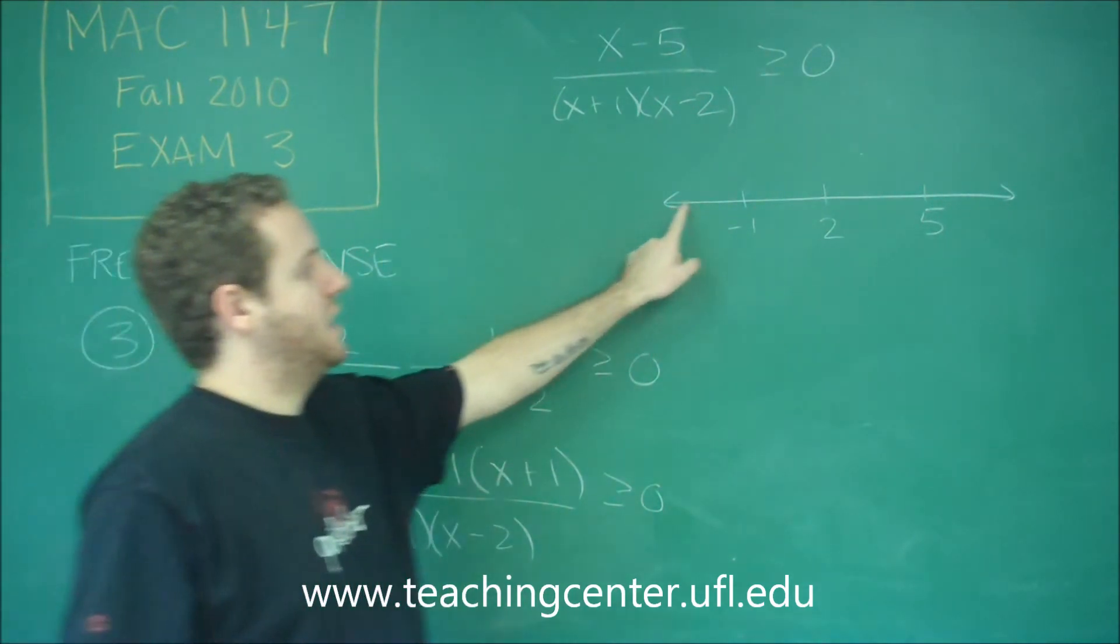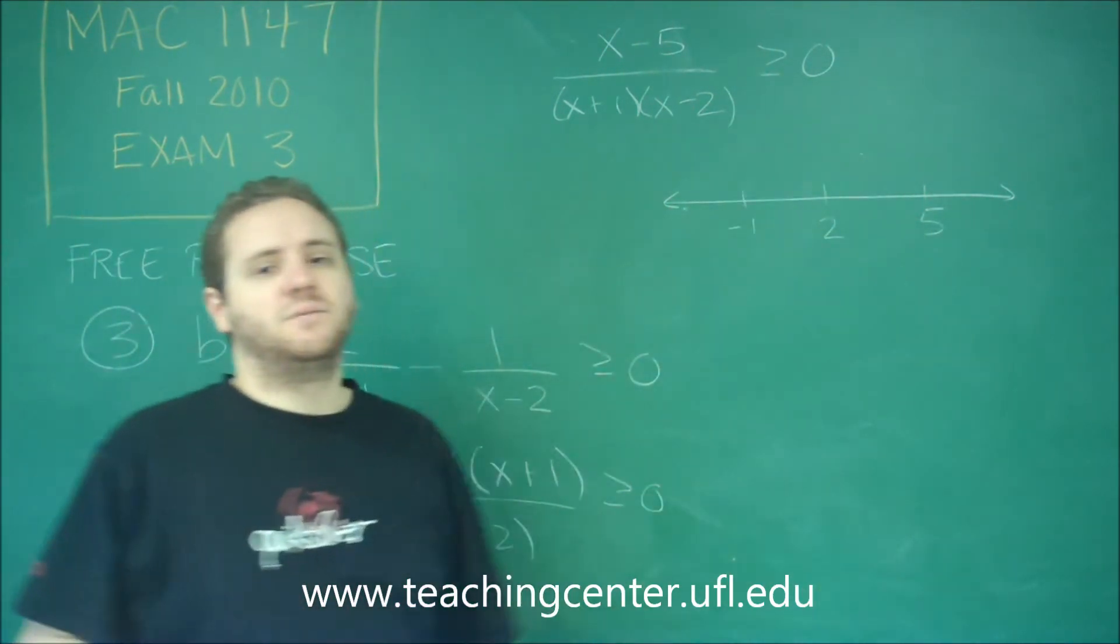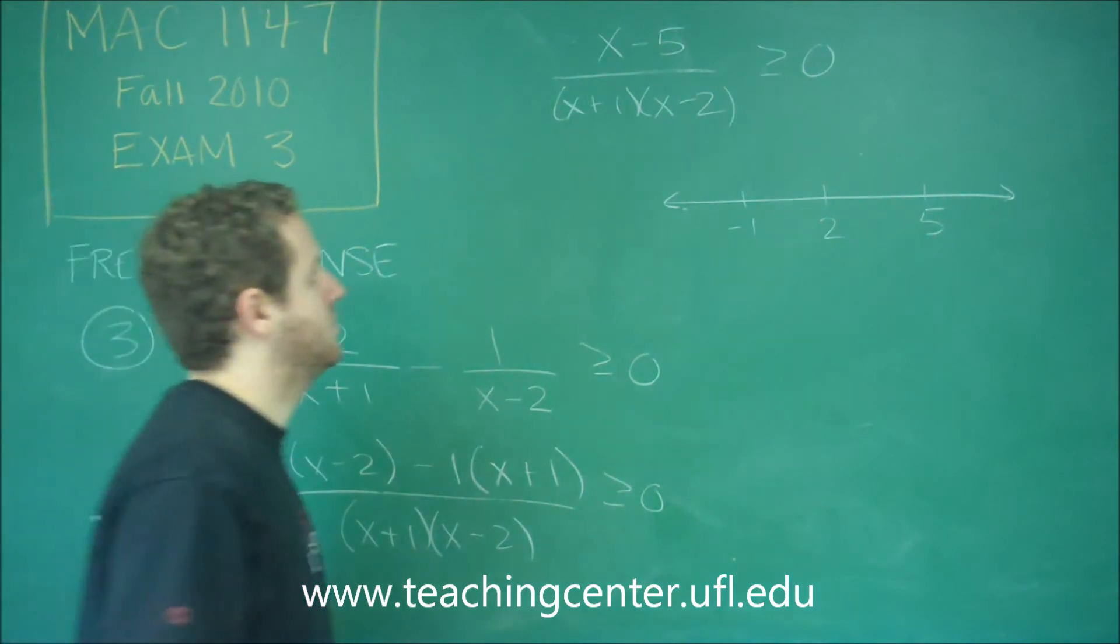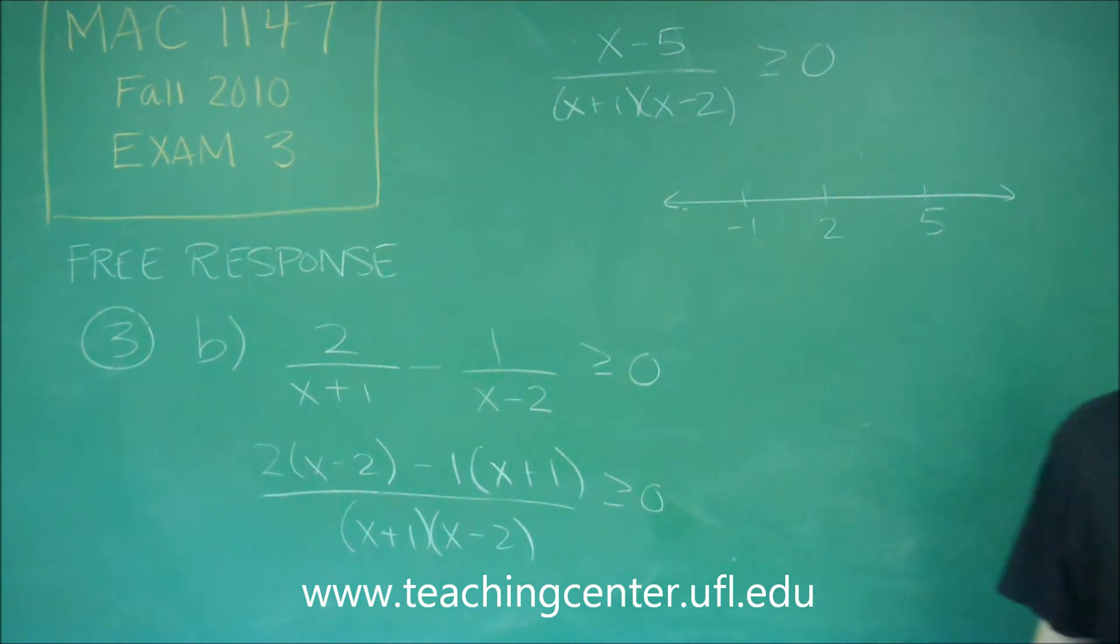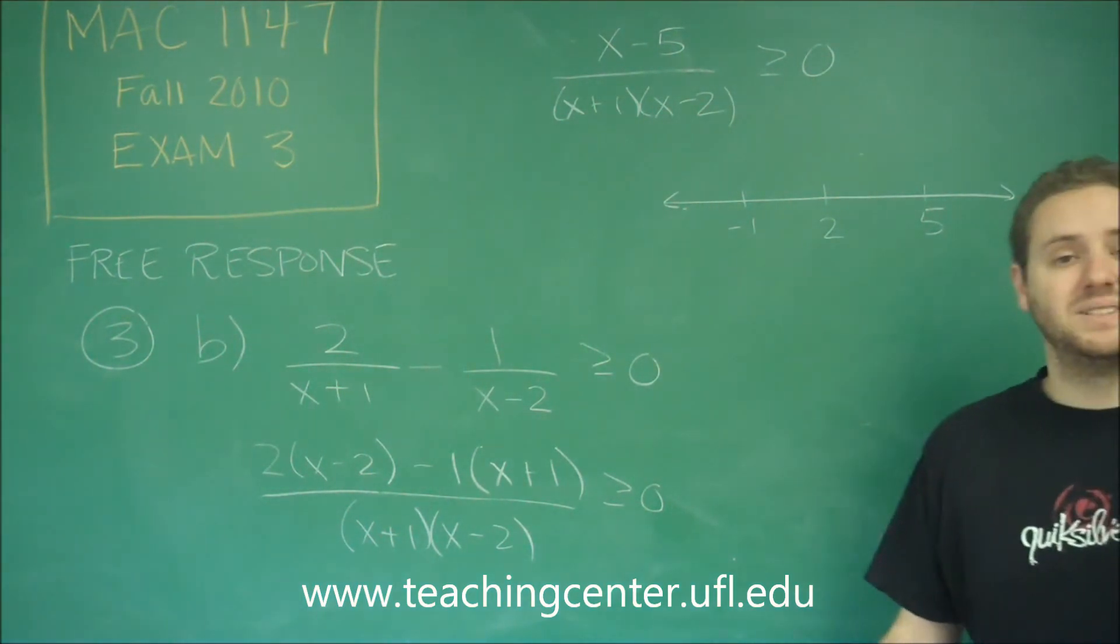So now all we need to do is check a number in each range and see if it's greater than or equal to 0. All we are checking for is that it's greater than or equal to 0. We don't really care what the number is. We just want to see if it's positive.